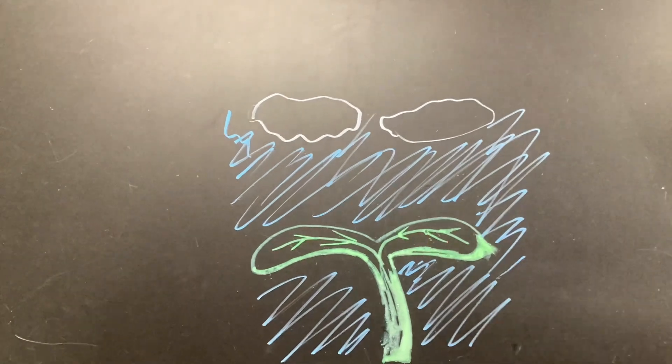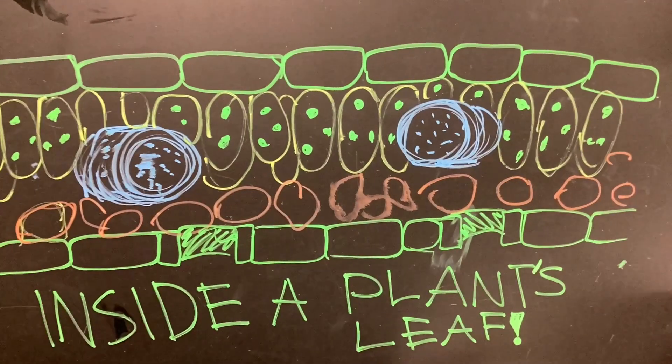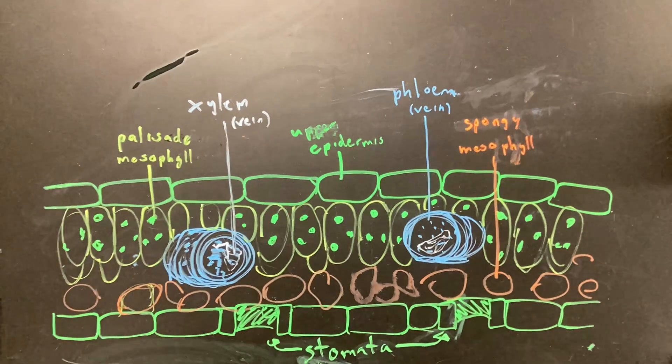This carbon dioxide can now enter into the leaf of a plant, through the stomata, and into the chloroplasts.